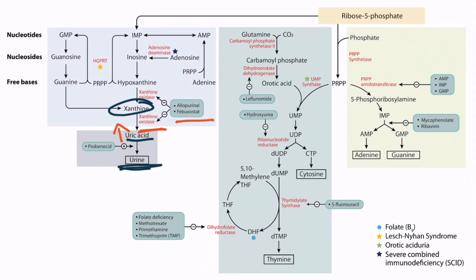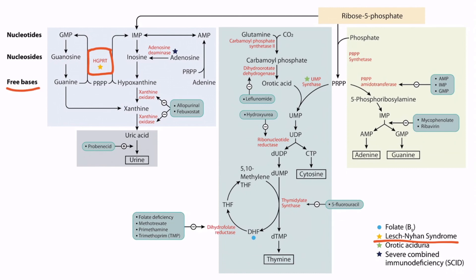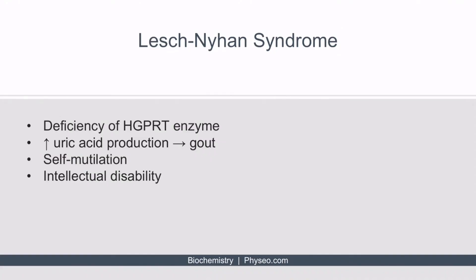Lesch-Nyhan syndrome is caused by a defect in HGPRT. HGPRT is necessary to recycle free bases, so a deficiency funnels purines to uric acid — these patients cannot reuse purines, which is why Lesch-Nyhan syndrome results in gout. Though the exact mechanism isn't clear, this disorder also causes self-mutilation and intellectual disability. In summary: Lesch-Nyhan syndrome is caused by deficiency of HGPRT and results in gout, self-mutilation, and intellectual disability.